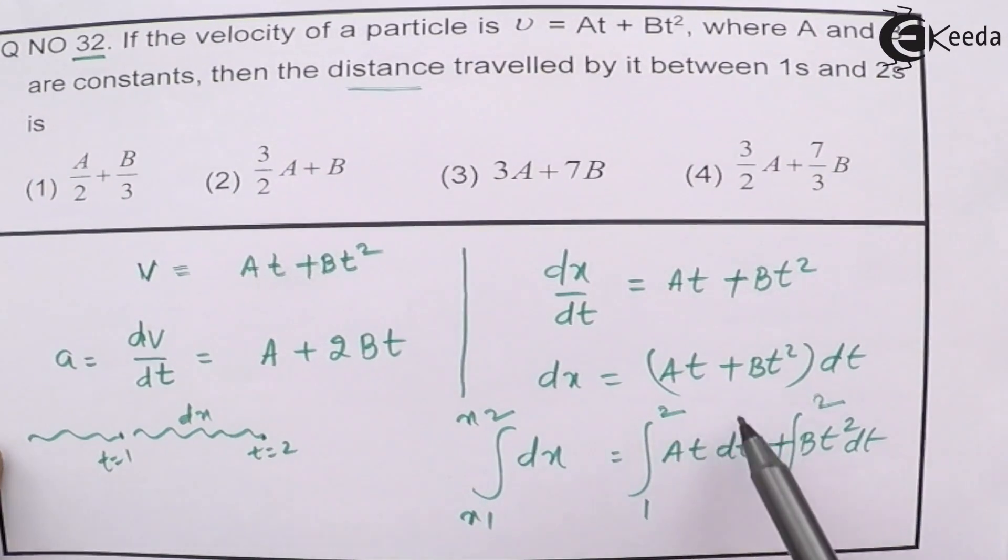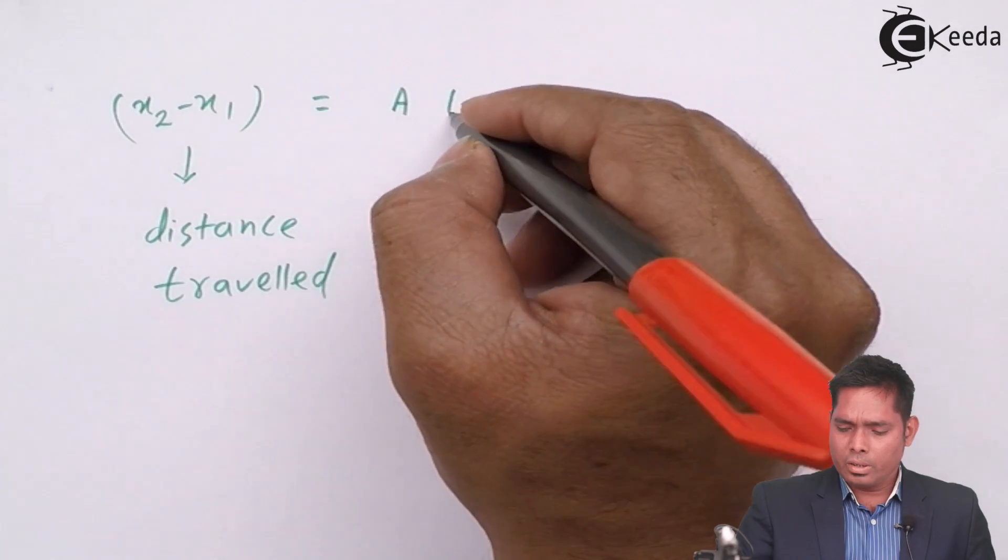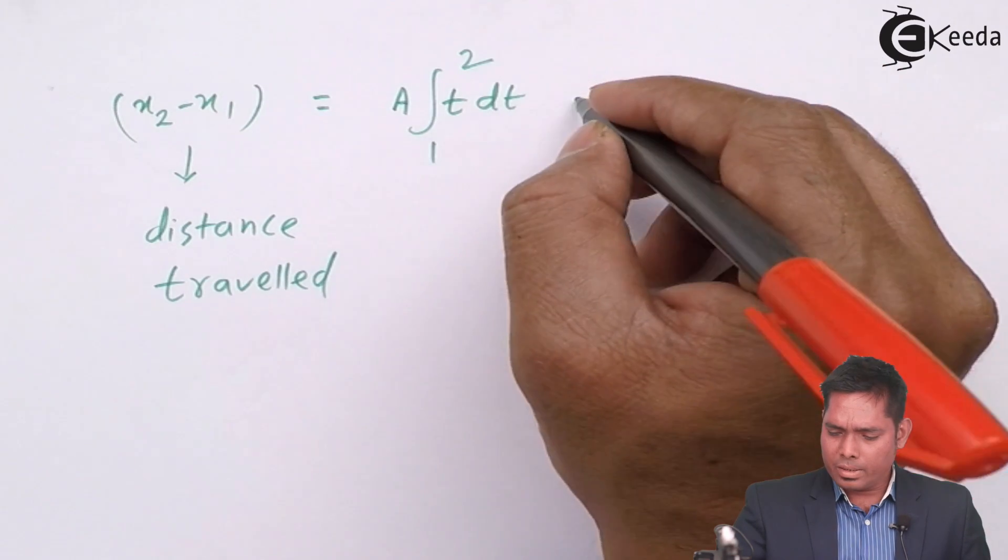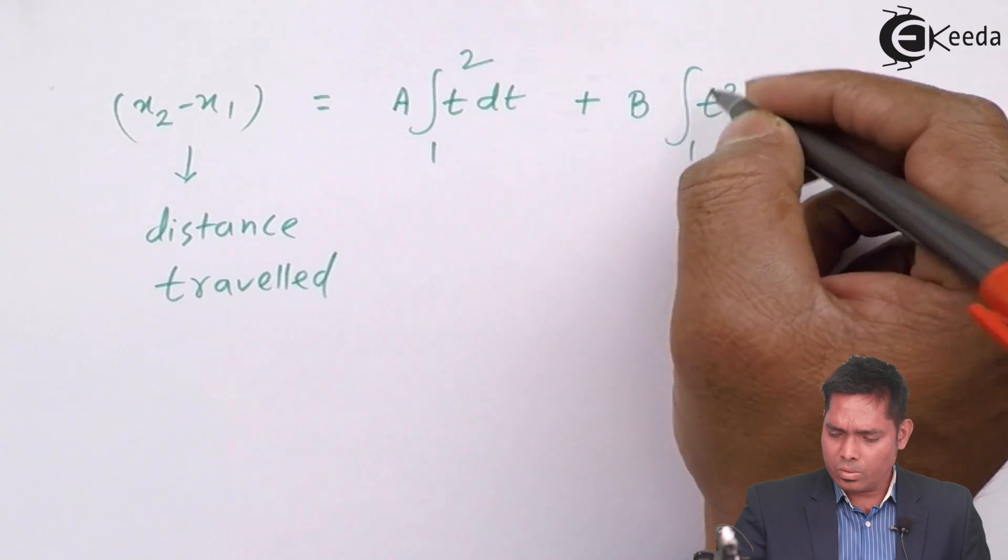It is AT dt, integration of 1 to 2, A is a constant taken out, t dt, integration 1 to 2, plus the second term is B, comes out, this is t square dt, integration 1 to 2.